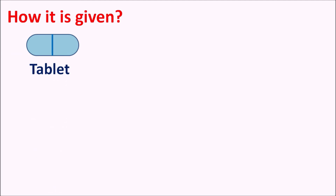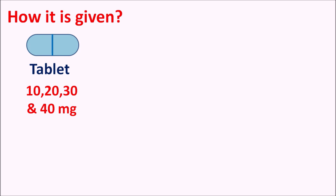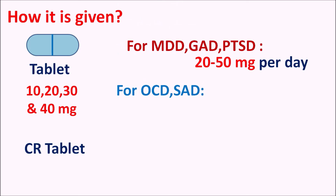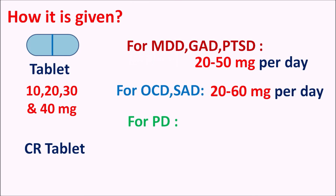Paroxetine is available as tablets at strengths of 10, 20, 30, and 40 mg, and also as an oral suspension and as a CR (controlled release) tablet. For major depressive disorder, generalized anxiety disorder, and post-traumatic stress disorder, the drug is initiated at 20 mg per day, with a dose range of 20 to 50 mg per day. For OCD and social anxiety disorder, the dose is 20 mg per day. For panic anxiety disorder, it is given at 10 to 60 mg per day.